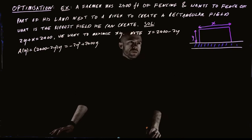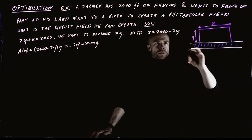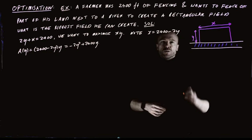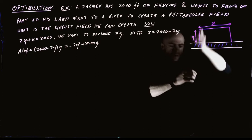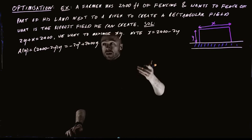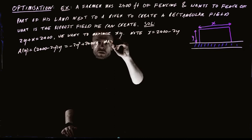This is the quantity we want to maximize. We have to think about what possible values of y we can have. Because the constraint is 2y has to be at most 2,400, the biggest y can be is 1,200. If y were 1,200, then x would have to be 0 — an incredibly thin field. So we want to maximize over the interval 0 to 1,200.